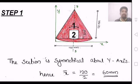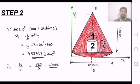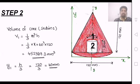x-bar equals the diameter 120 divided by 2, which equals 60 mm. In step 2, we check the volume and centroidal distances. For the cone, the volume is 1 by 3 pi r square h, with r equal to 60 and height 120. y1 is h by 3 from the base, so 120 divided by 3 equals 40 mm.